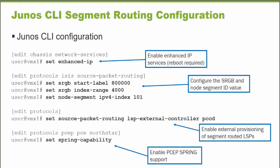This screen displays the CLI configuration required to enable segment routing support on a Junos platform. This is a VMX router sample configuration. We'll connect to it in a couple minutes and I'll actually run these commands. The first thing that has to be enabled is enhanced IP services on the platform. Under the edit chassis network services branch, it's a simple 'set enhanced IP' command. For the functionality to take effect, you actually have to reboot the platform, so I've already done this part on the node we're going to use for the demonstration.